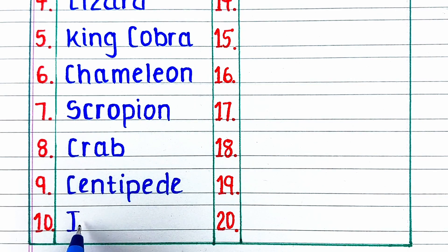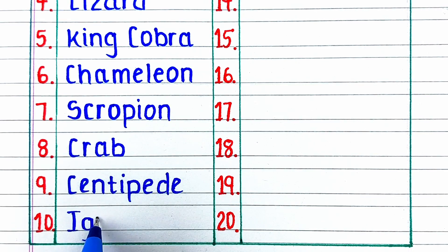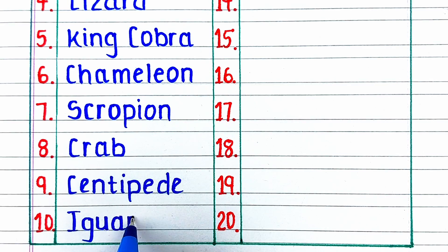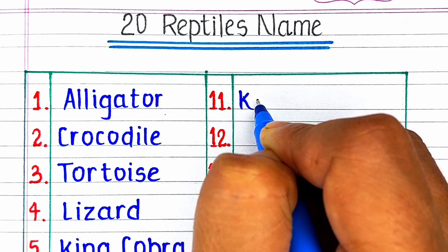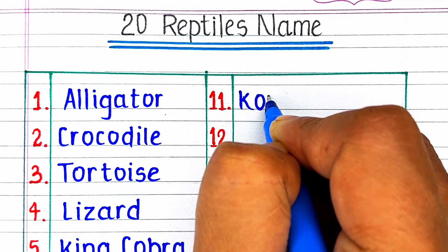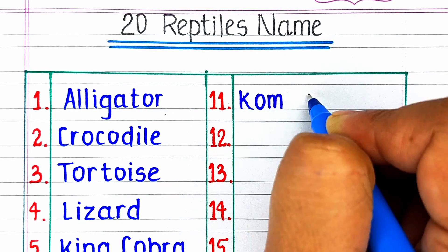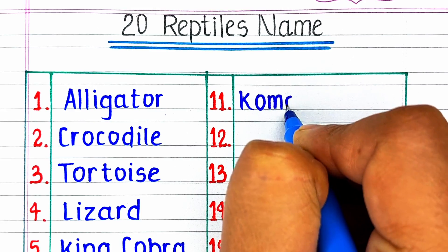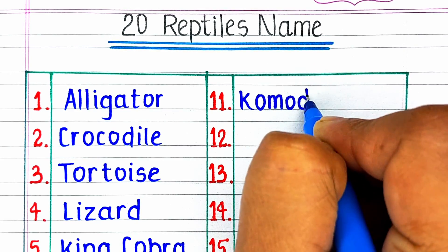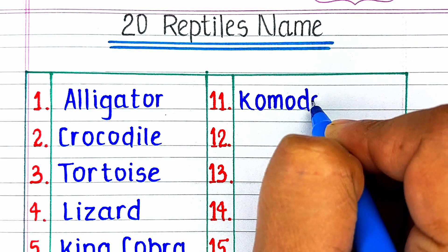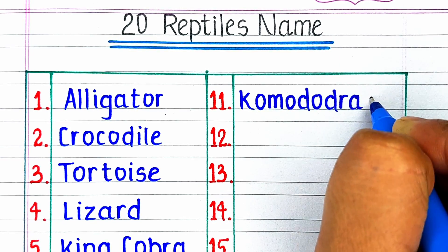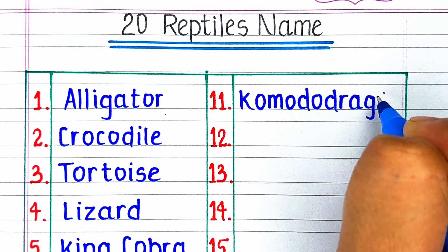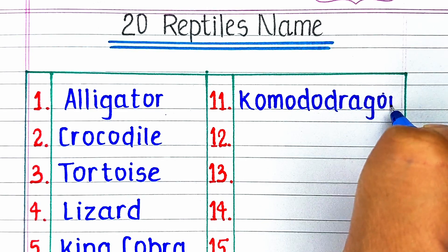Next reptile in our list is I-G-U-A-N-A, iguana. On number eleven we have K-O-M-O-D-O D-R-A-G-O-N, Komodo dragon.